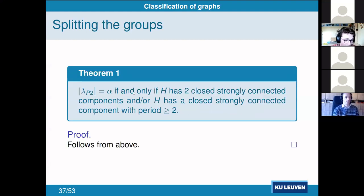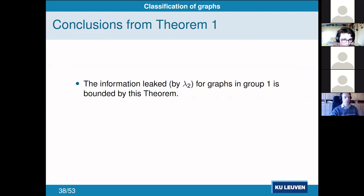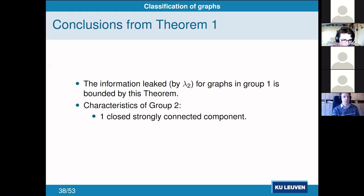This means directly that a graph is in the line group — with second eigenvalue of modulus equal to the teleportation probability — if and only if either the graph has two or more closed strongly connected components, or it has a closed strongly connected component with period greater than or equal to two. That characterizes the line group entirely.